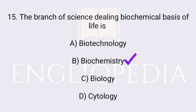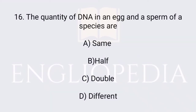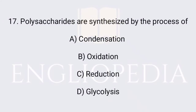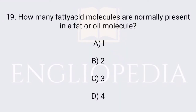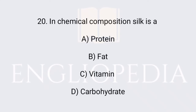Which formula is a carbohydrate? C3H6O3 is the formula for a carbohydrate. The branch of science dealing with the biochemical basis of life is biochemistry. The quantity of DNA in an egg and a sperm of a species are the same. Polysaccharides are synthesized by the process of condensation. The percentage of protein in a mammalian cell per total weight is 18%. Three fatty acid molecules are normally present in a fat or oil molecule.